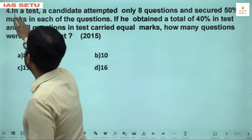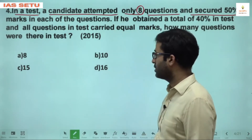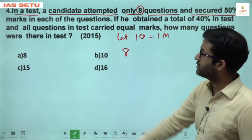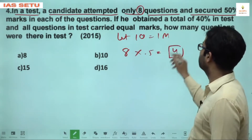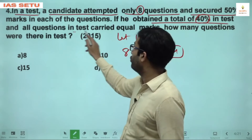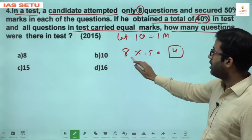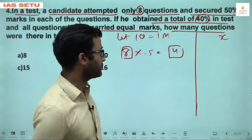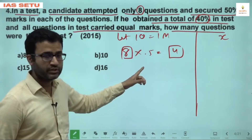Question 4: In a test, a candidate attempted only 8 questions and secured 50% marks in each question — meaning half marks in each. So his total marks are 4 (assuming 1 mark per question). He obtained a total of 40% in the test, and all questions carried equal marks.